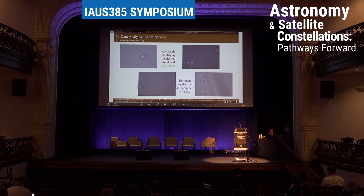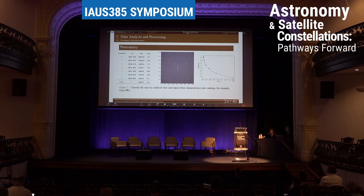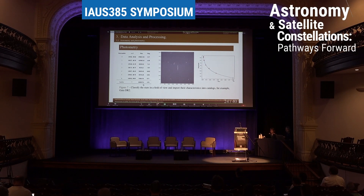After observation, we perform data analysis and processing. First, we filter the images by accurately identifying the desired satellite streak and eliminating distorted or incomplete streaks. We then perform astrometry and photometry by adding the World Coordinate System to each image. We use reference stars from the Gaia catalog to measure the flux of each star in the image and compute the integrated flux of the satellite, estimating the satellite's magnitude — for example, 4.7 magnitudes.